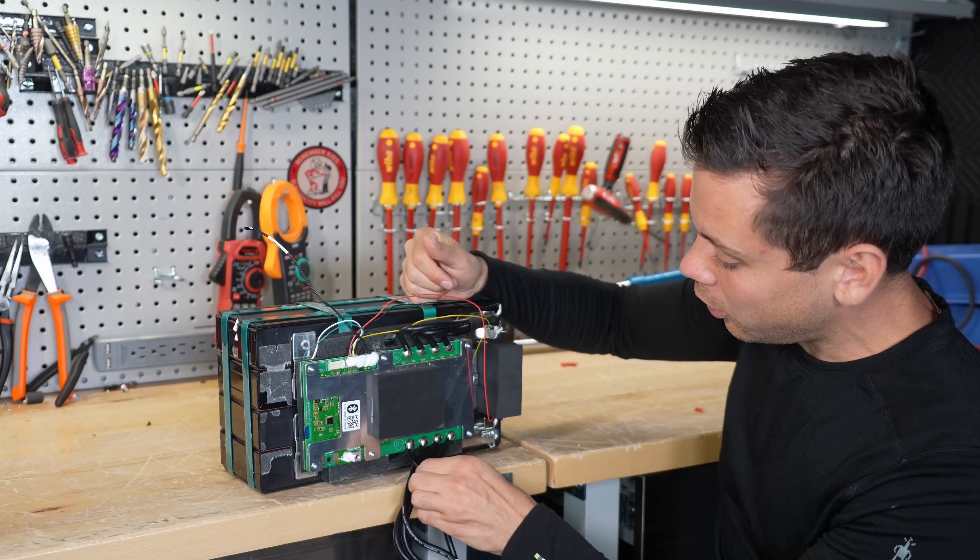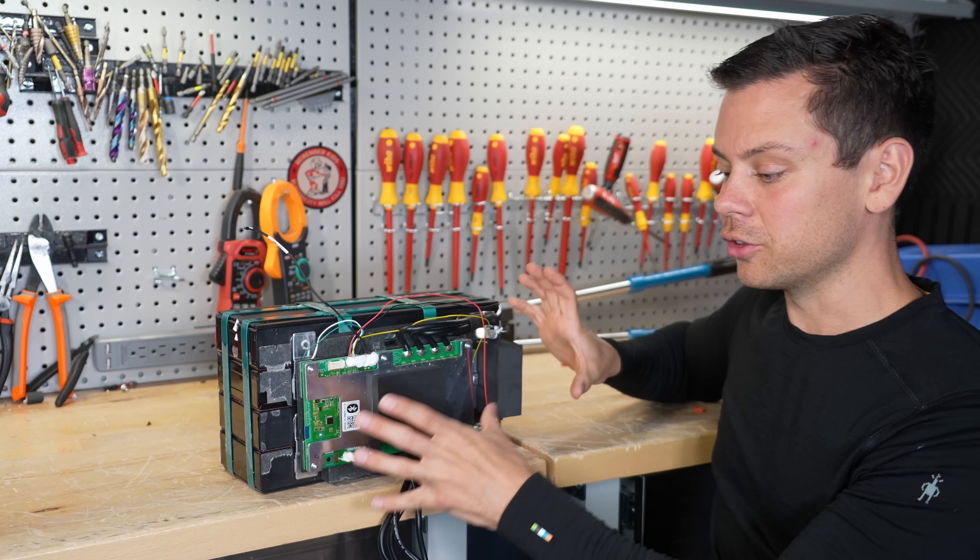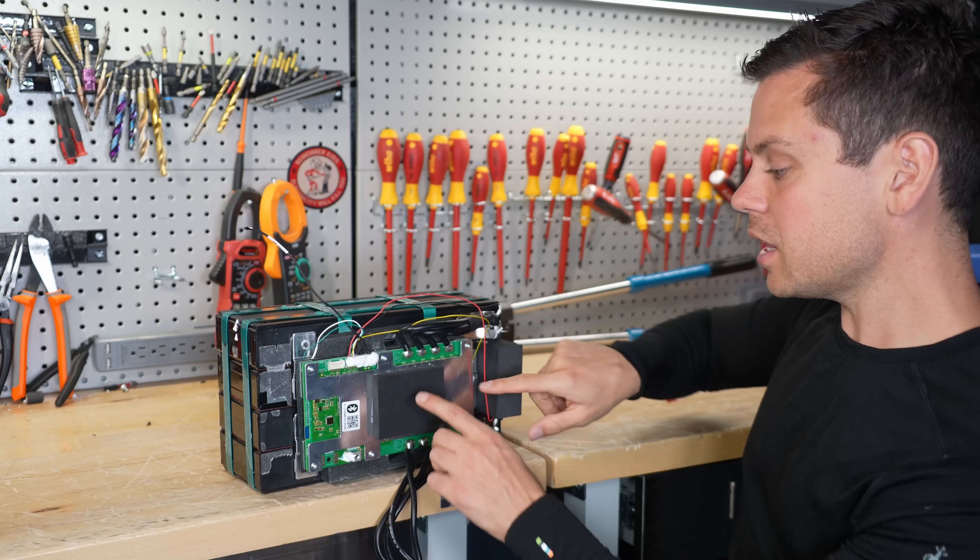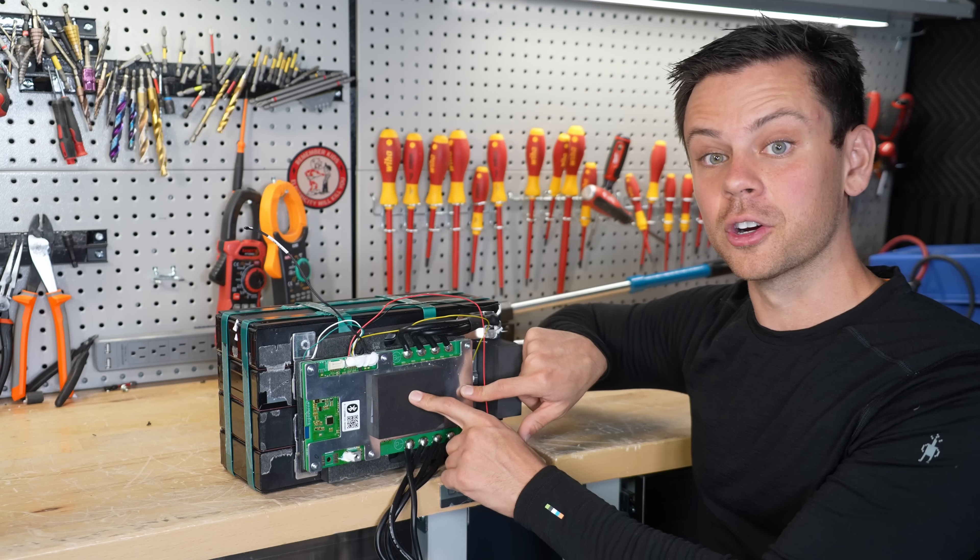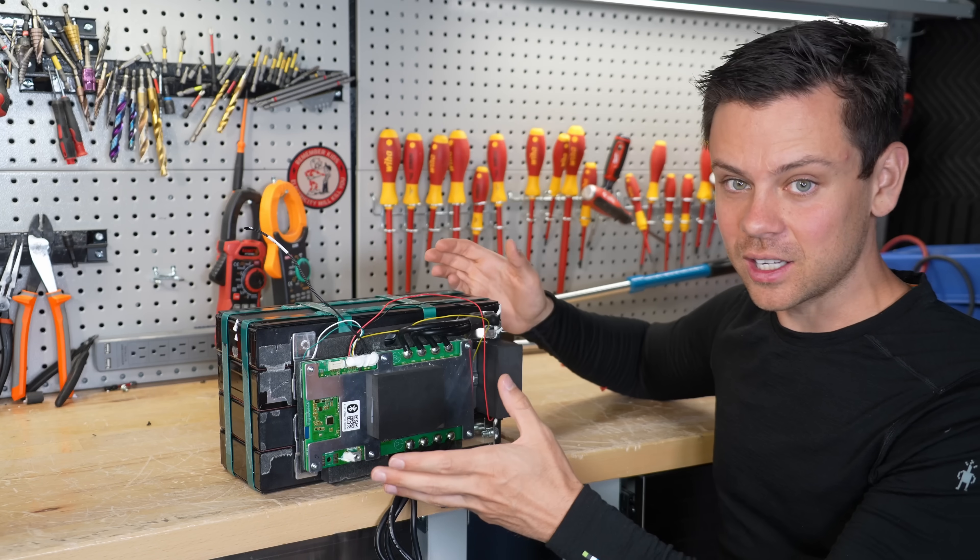And if one of these were to pull out and touch this positive terminal, for example, you're going to have an internal short. And that will generate heat. And it can melt the case. But usually the BMS will catch it because it has overcurrent protection. But sometimes the build quality is so bad that it can't catch it.